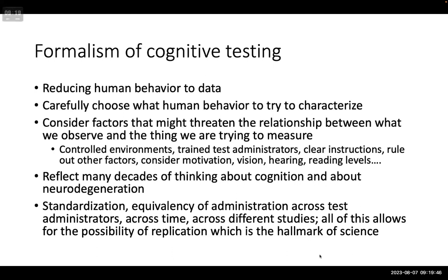Vision, hearing, and reading levels — all the things routinely part of cognitive assessment — are really important in trying to do the best science we can to characterize brain functioning. These routine procedures reflect many decades of thinking about cognition and neurodegeneration. A lot of the tried-and-true neuropsych measures have been very carefully constructed, with a lot of thought about specific words, task lengths, and other considerations.